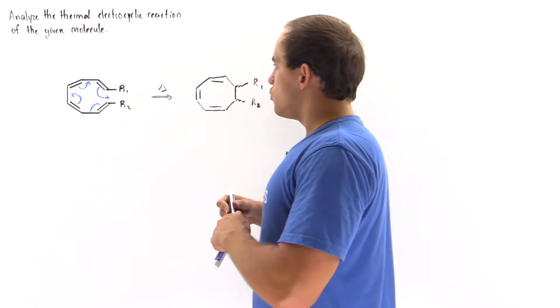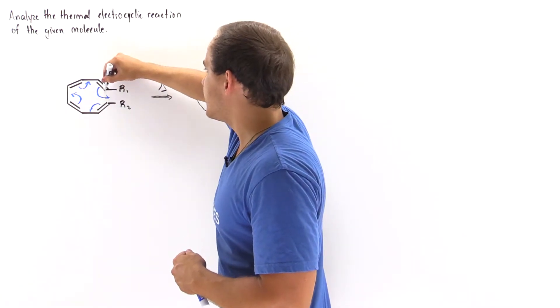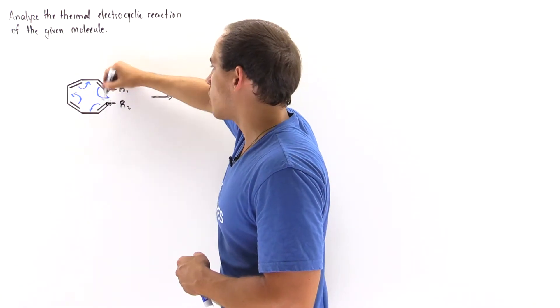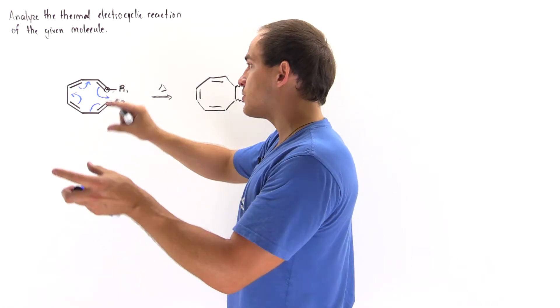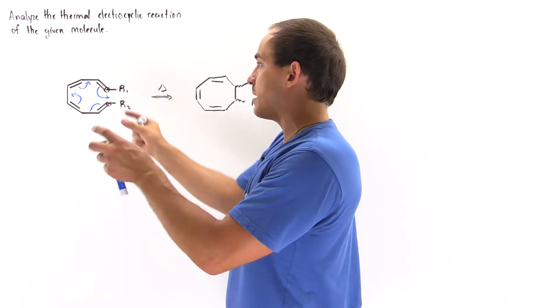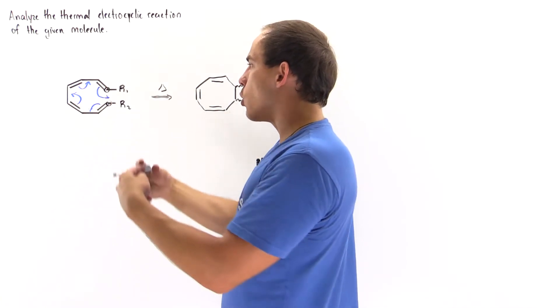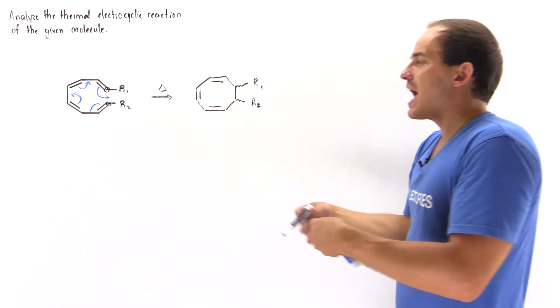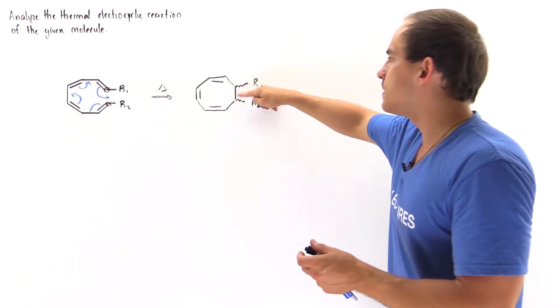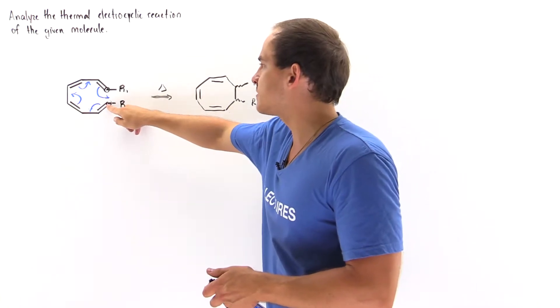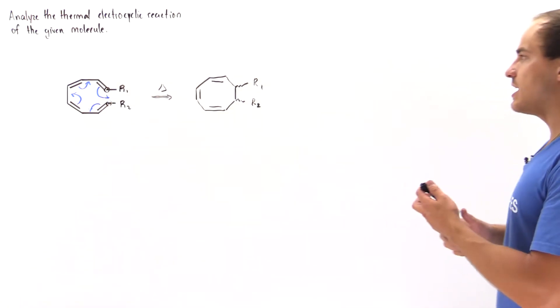Now notice that we have this carbon atom and this carbon atom whose orbitals have to change geometries. They have to orient in a special way to actually overlap. The question is how exactly will this overlap take place to form this sigma bond between the first carbon and the eighth carbon.